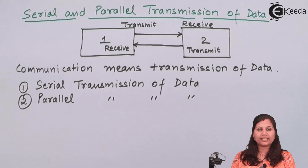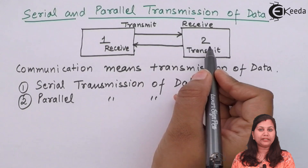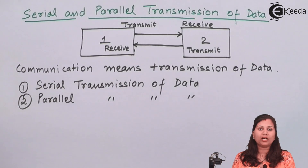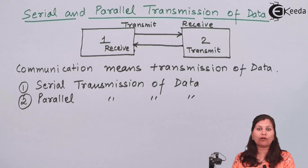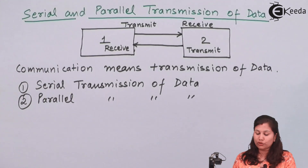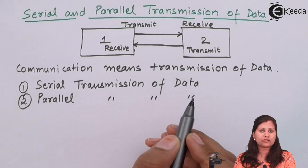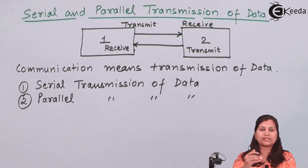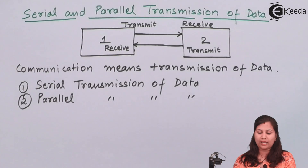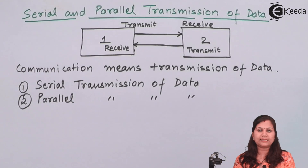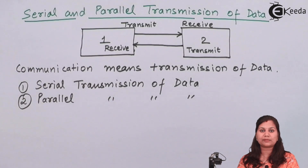Here we are taking component one and component two. In the case of computers and microprocessors, which deal with data in the form of bits, when data is transmitted it means the bits of that data are transmitted. In case of serial transmission, only one bit is transmitted at a time, whereas in case of parallel transmission, all the bits are simultaneously transmitted. That is the difference between serial and parallel transmission of data.